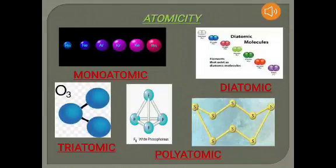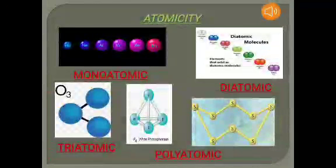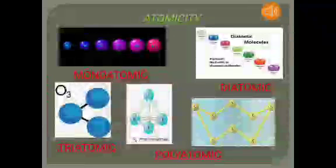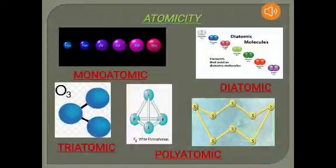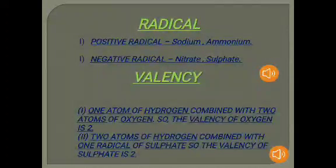An example of a triatomic molecule is ozone. A polyatomic molecule is a molecule of an element composed of more than three atoms. Examples are phosphorus, which is tetraatomic, meaning it has four atoms, and sulfur, which is octaatomic, meaning it has eight atoms.